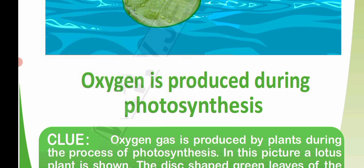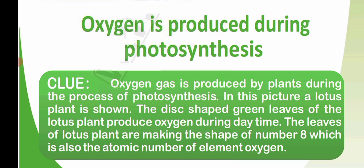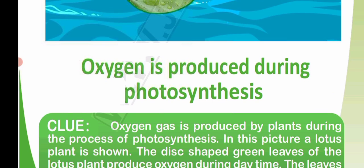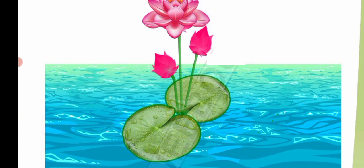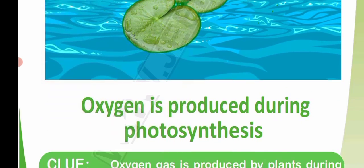Oxygen is produced by plants during the process of photosynthesis. In this picture, a lotus plant is shown. The disc-shaped green leaves of the lotus plant produce oxygen during daytime. The leaves of the lotus plant are making the shape of number eight, which is also the atomic number of element oxygen. So the atomic number of oxygen is eight.